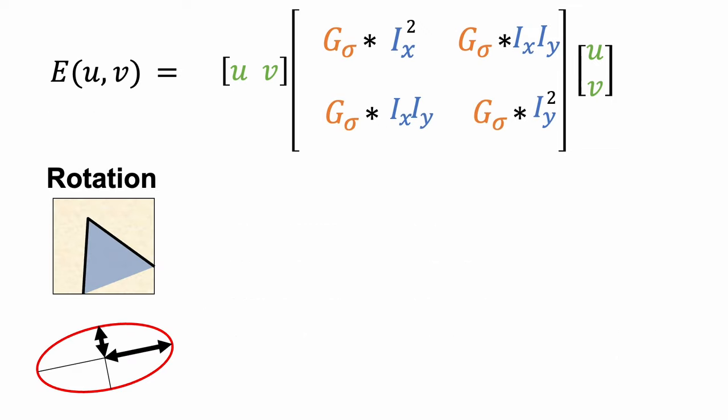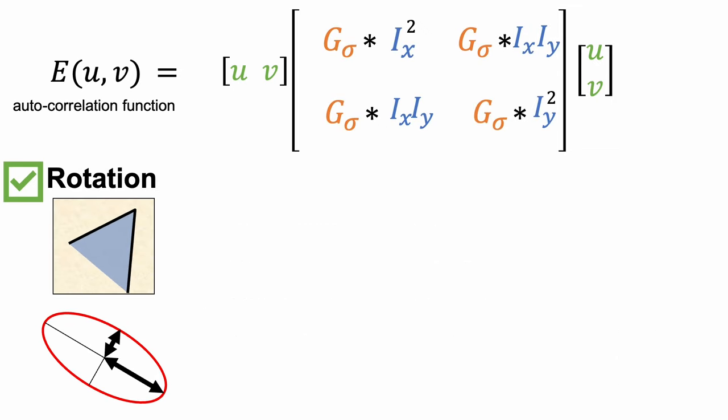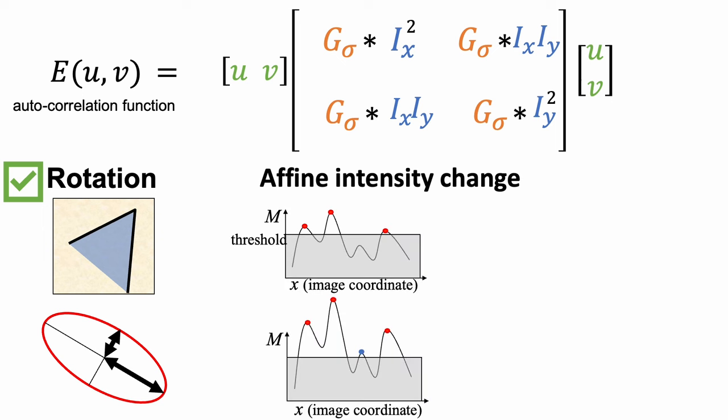The feature detection algorithm can still detect the same corner under image rotation. While the orientation of the ellipsoid changes, the shape remains the same. Corner detection is invariant to intensity shifts because only image gradients are used, but it is only partially invariant to intensity scaling.